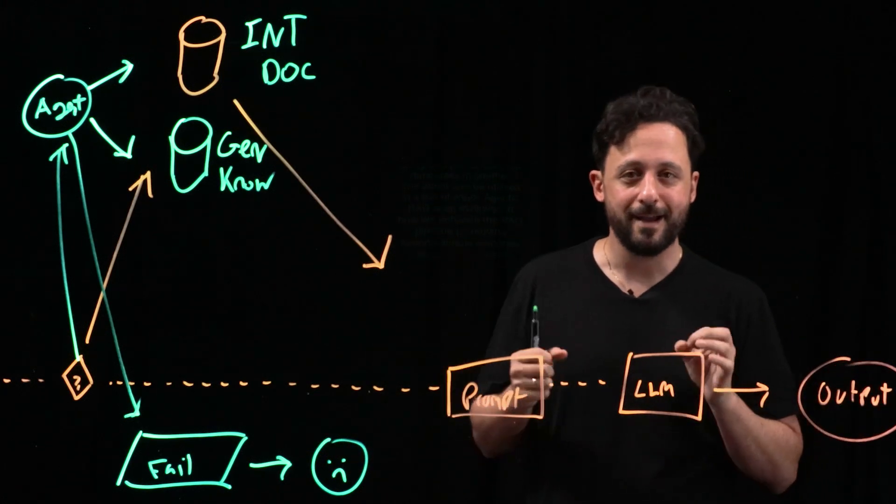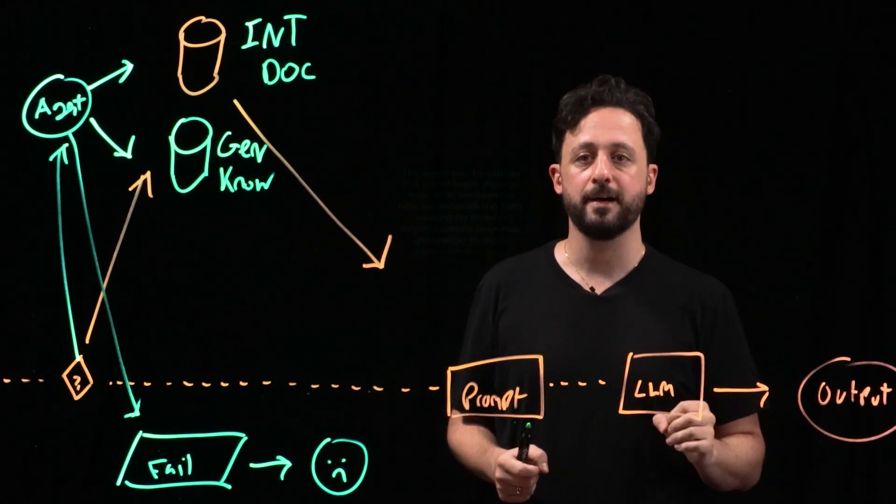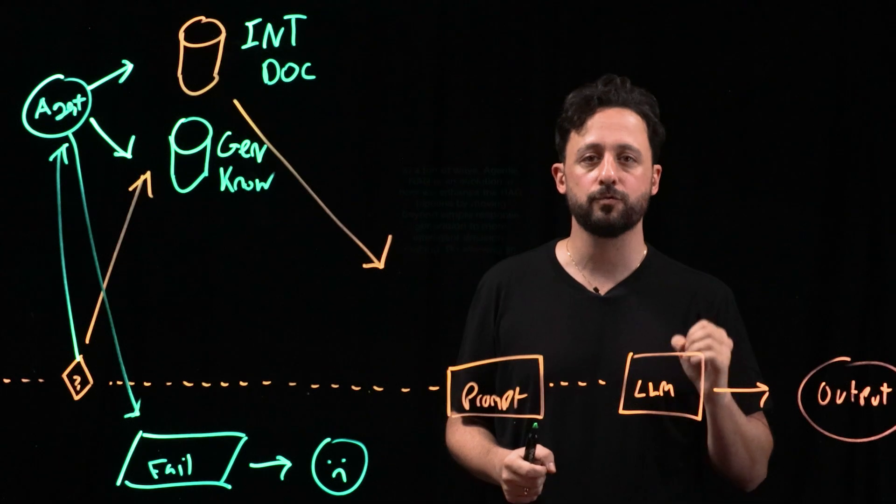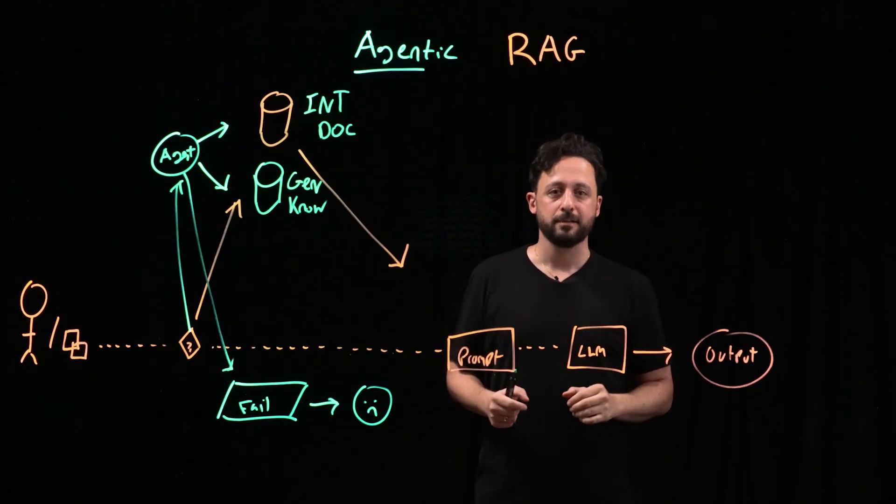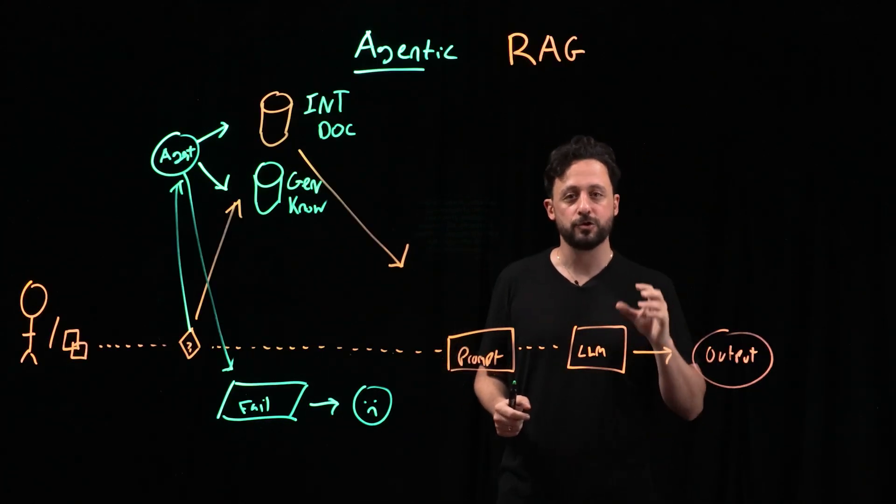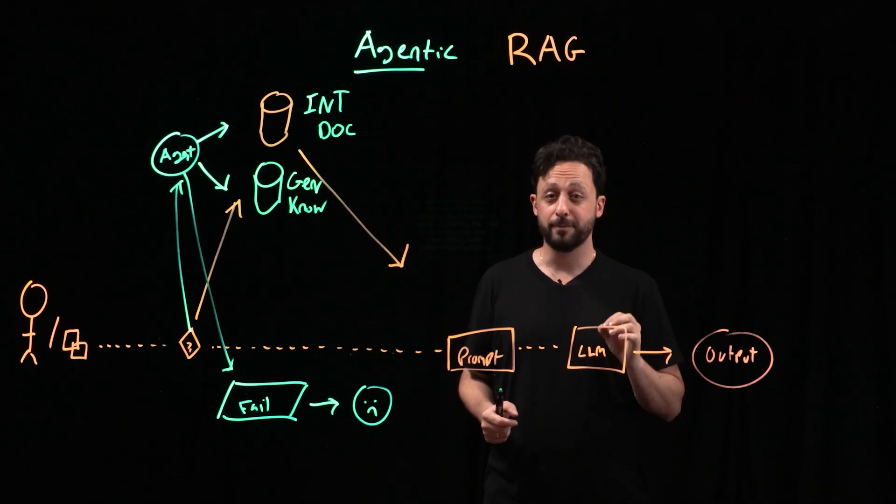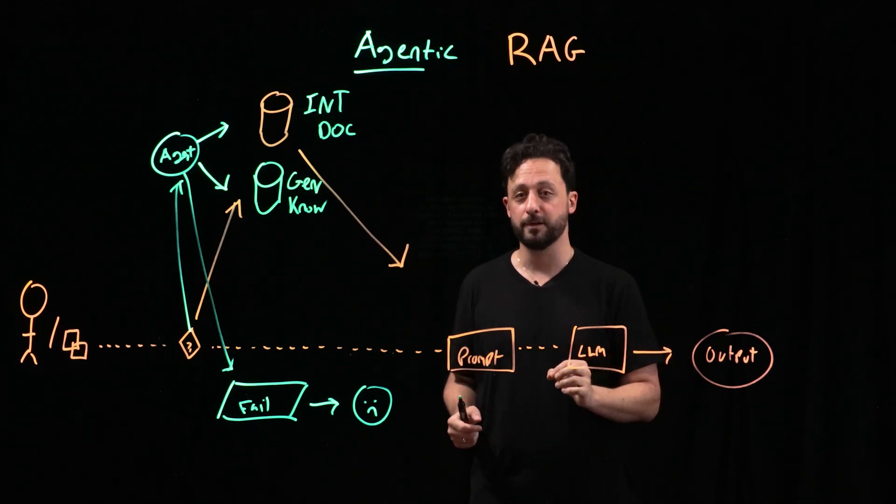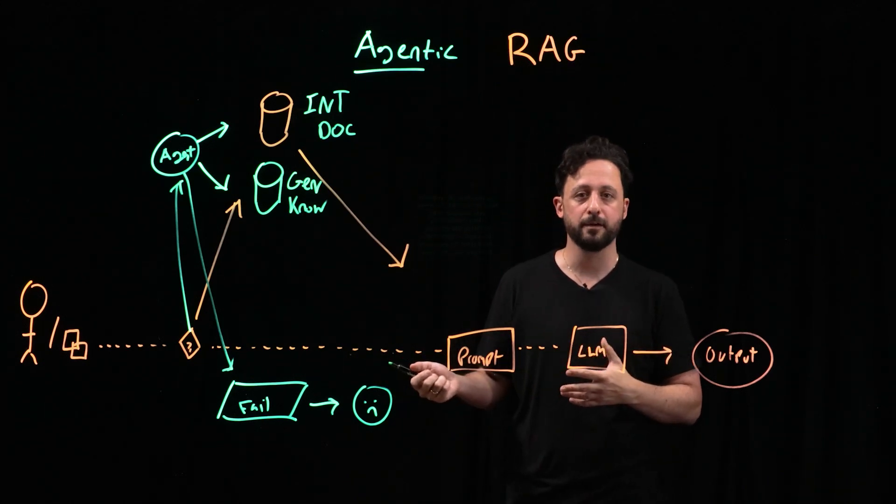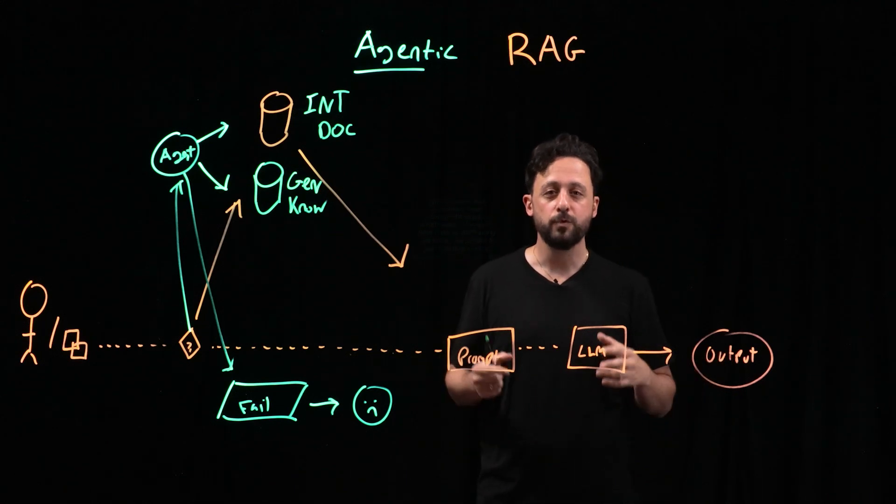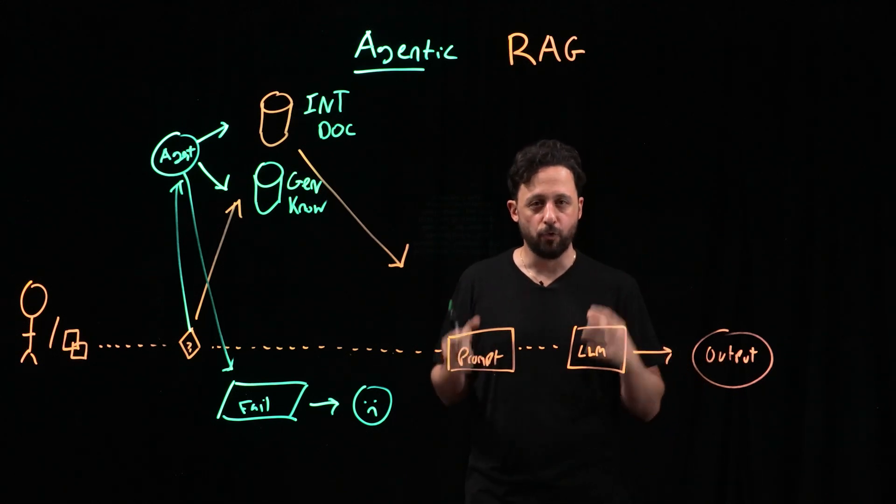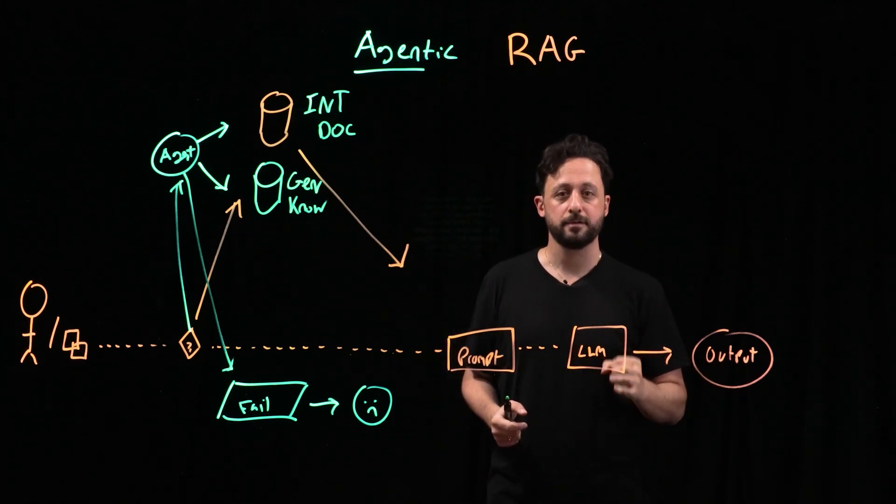Agentic RAG is an evolution in how we enhance the RAG pipeline by moving beyond simple response generation to more intelligent decision-making. By allowing an agent to choose the best data sources and potentially even incorporate external information, like real-time data or third-party services, we can create a pipeline that's more responsive, more accurate, and more adaptable.